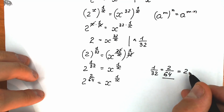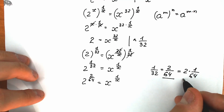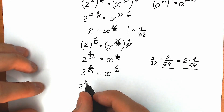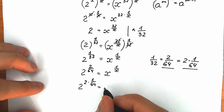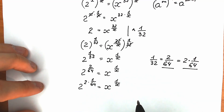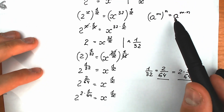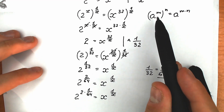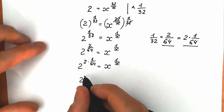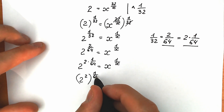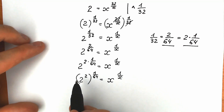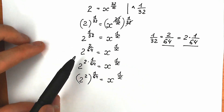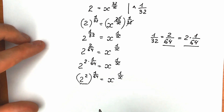We can write 2 over 64 as 2 times 1 over 64, which is the same expression. So we have 2 to the power 2 times 1 over 64. Using the power rule in reverse, we can bring the 2 inside parentheses: 2 to the power 2, raised to the power 1 over 64. Since 2 squared equals 4, we have 4 to the power 1 over 64 equal to x to the power 1 over x.